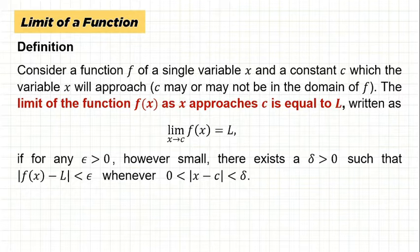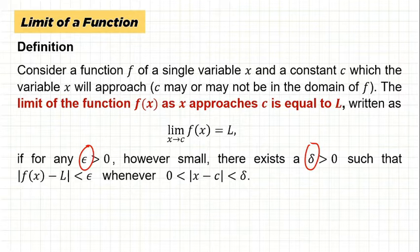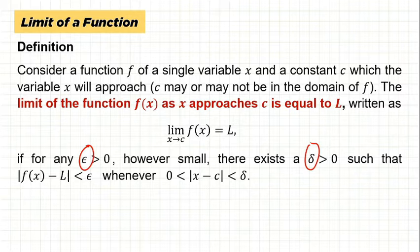To better understand this definition, let's break down the notations used. When we take epsilon greater than 0, we can find a delta greater than 0. Epsilon and delta represent very small positive numbers — they are just small positive values used in the formal definition.